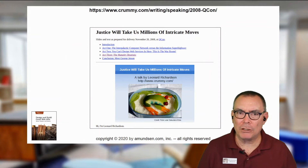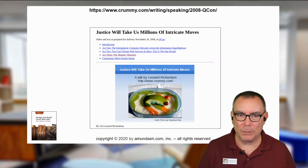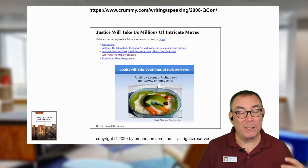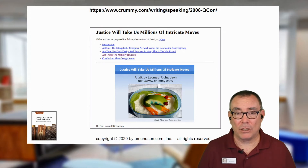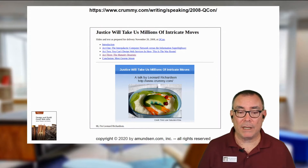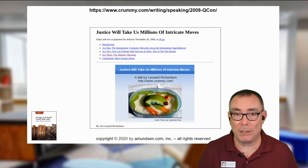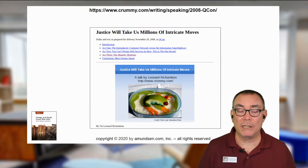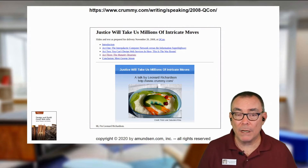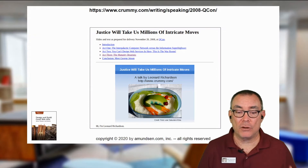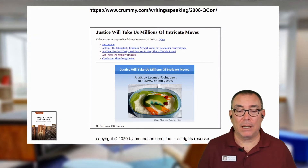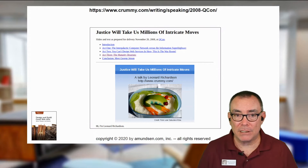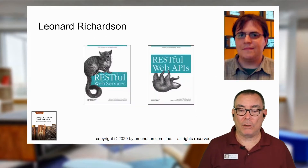First, I want to talk a little bit about Leonard Richardson and his maturity model. Leonard gave this fantastic talk in 2008 at a QCon event called "Justice Will Take Us Millions of Intricate Moves." It was a really, really great talk. And one of the elements in that talk was this notion of a maturity heuristic — a maturity heuristic for the kinds of work that we're doing on the web.